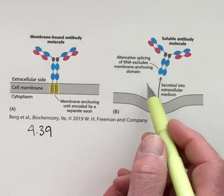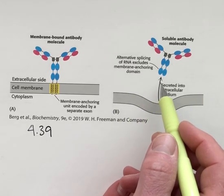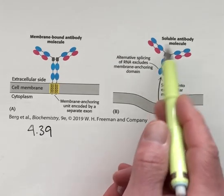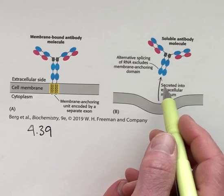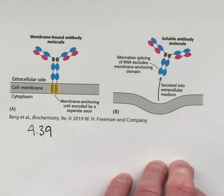And then once that immune cell has become stimulated, alternative splicing as the messenger RNA matures creates a new gene product where that antibody is released into the blood and can neutralize viral agents like COVID-19.